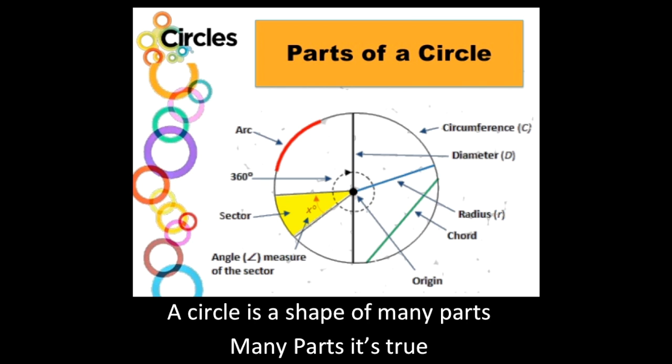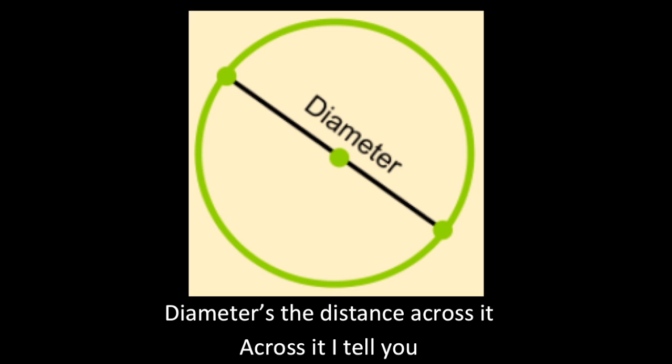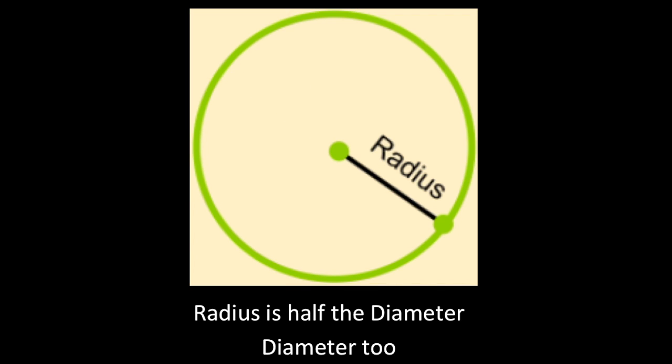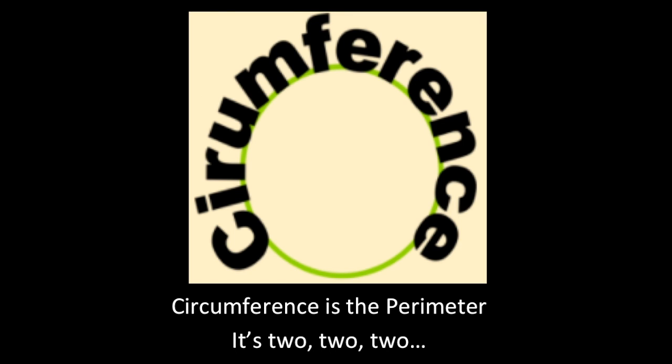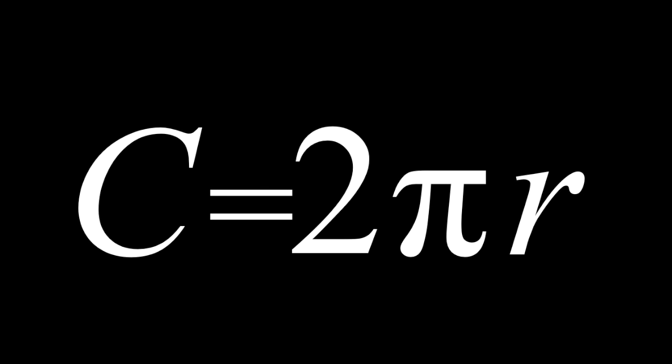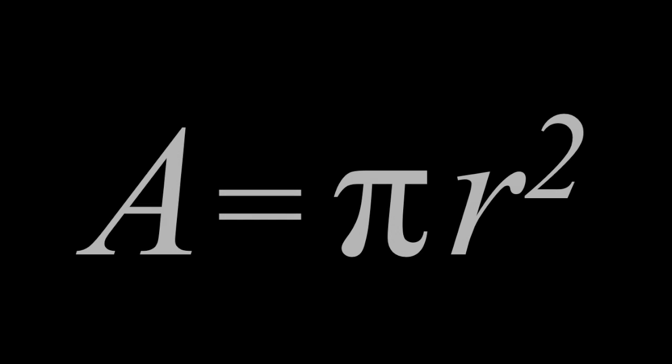A circle is a shape with many parts, it's true. Diameter is the distance across it. Radius is half the diameter. Circumference is the perimeter — two times pi times r is circumference. And pi times r squared is the area of a circle.